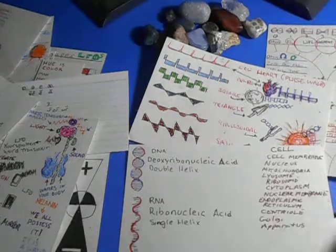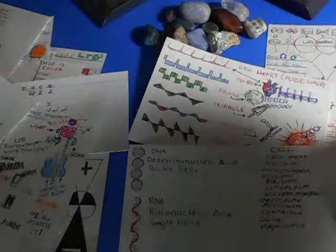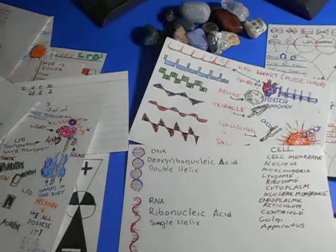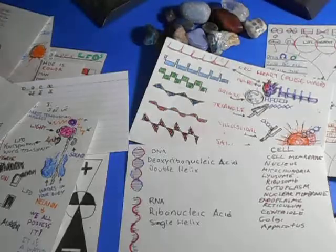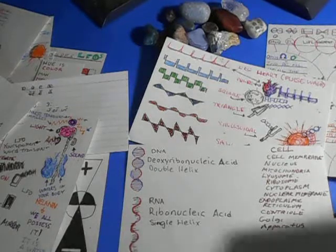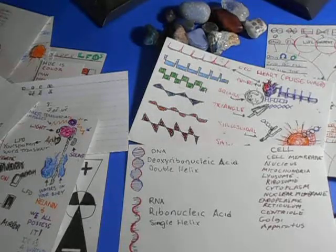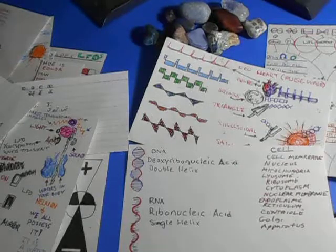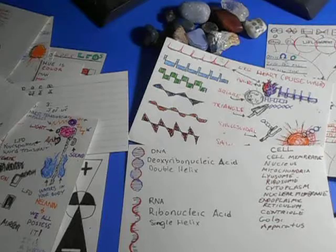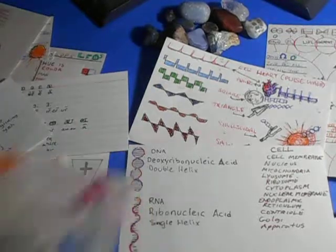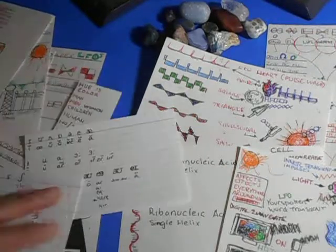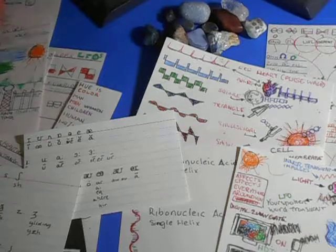Cell. Cell membrane. Nucleus. Mitochondria. Lyozone. Ribosome. Cytoplasm. You got nuclear membrane. Nuclear. You start thinking about nuclear power plants. Wow. Endoplasmic reticulum. Centriol. And Golgi apparatus. What's an apparatus? A device for something, right? You know that word. If you don't know that word, then I don't know. Suggest start reading more dictionaries or something.